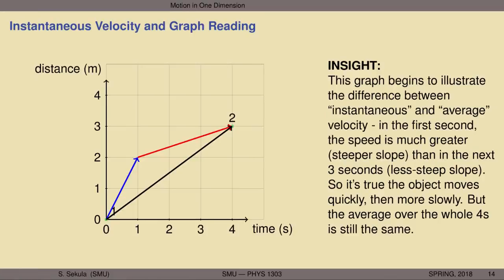This begins to illustrate the difference between instantaneous velocity — the velocity at a given moment in time — and average velocity, which covers a long period during which fluctuations may cancel out. Over four seconds, the object moves quickly at first — the blue line has a steep slope — then much more slowly, represented by the less steep red line. But those differences just average out to the same 0.75 meters per second. That's the beauty of physics.